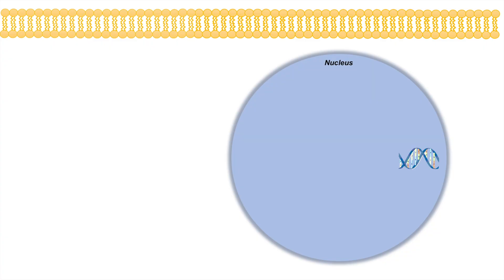Here's our nucleus. Proteins entering into the nucleus from the cytosol enter through nuclear pore complexes, or NPCs. The nuclear membrane is a double membrane, so large proteins like transcription factors have to get into the nucleus through these nuclear pore complexes. Proteins less than 60 kilodaltons can usually enter by passive diffusion, but if the protein is larger than 60 kilodaltons, it requires active transport with the help of importins, which bind to the protein — it could be a transcription factor — through the amino acid sequence known as the nuclear localization signal.